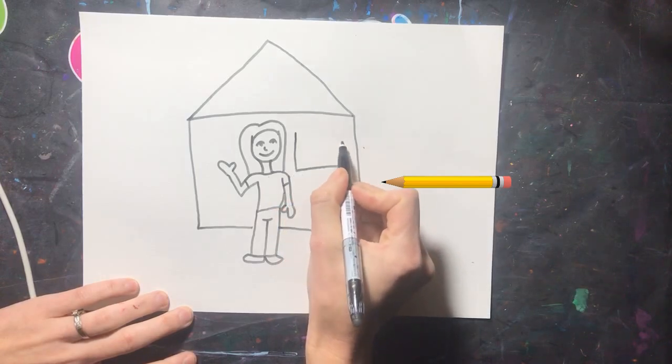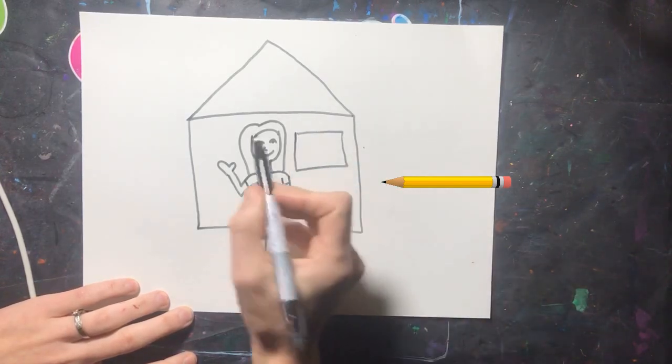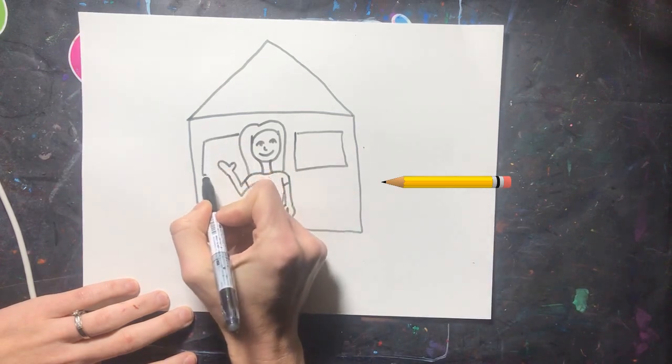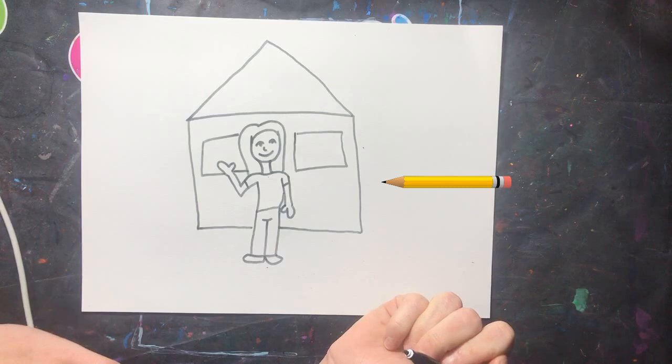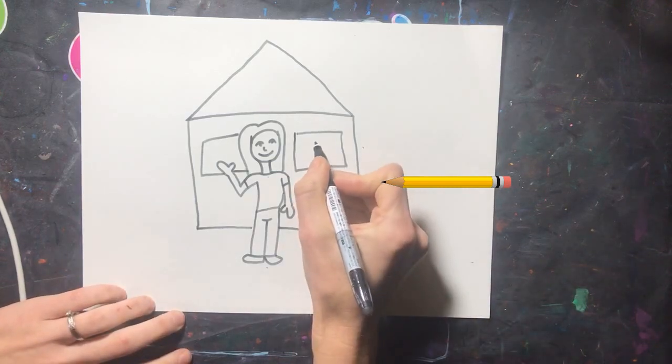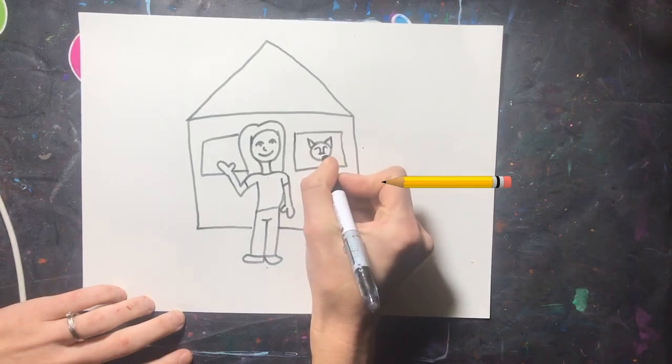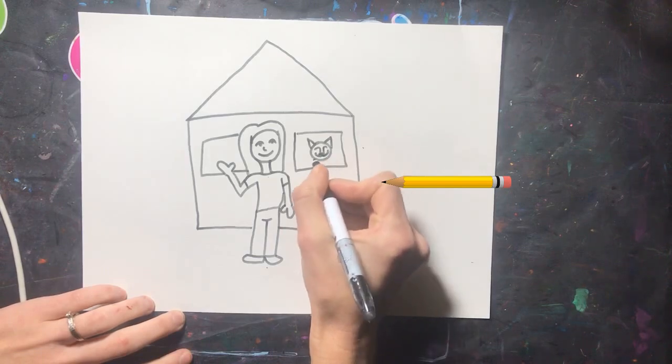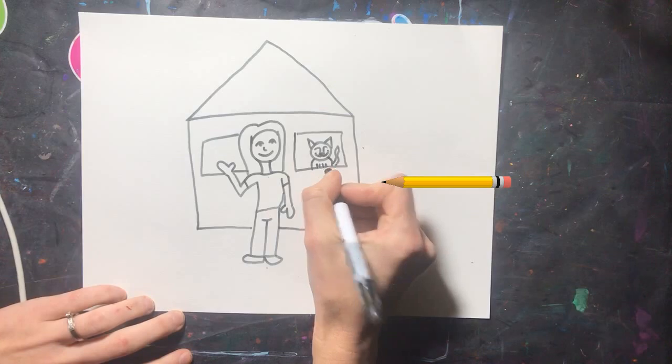Once you have drawn the shape of your house, make sure to give it a big empty window. Don't draw lines or curtains in your window because we need to draw something inside. Now I'm going to draw something inside my window. I'm going to draw part of a cat. You can draw another person, a cat, a dog, a vase, anything that you want to show that something is inside the house.